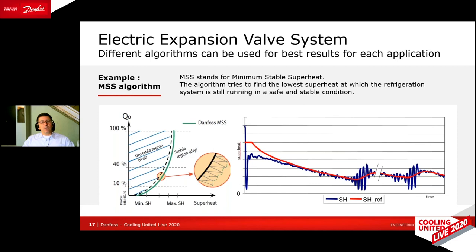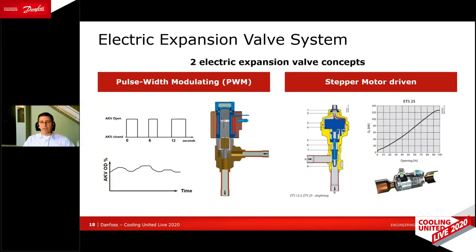This is done by the superheat controller constantly trying to reduce the superheat until it starts to become unstable. When the first droplets come out of the evaporator, the controller recognizes the superheat is too low and increases it a little, making the system stable again. After some time, it tries to reduce again — maybe conditions have changed and a lower superheat is now possible. It reduces until instability, increases slightly, waits, and tries again — always chasing the MSS curve to reach the best superheat.